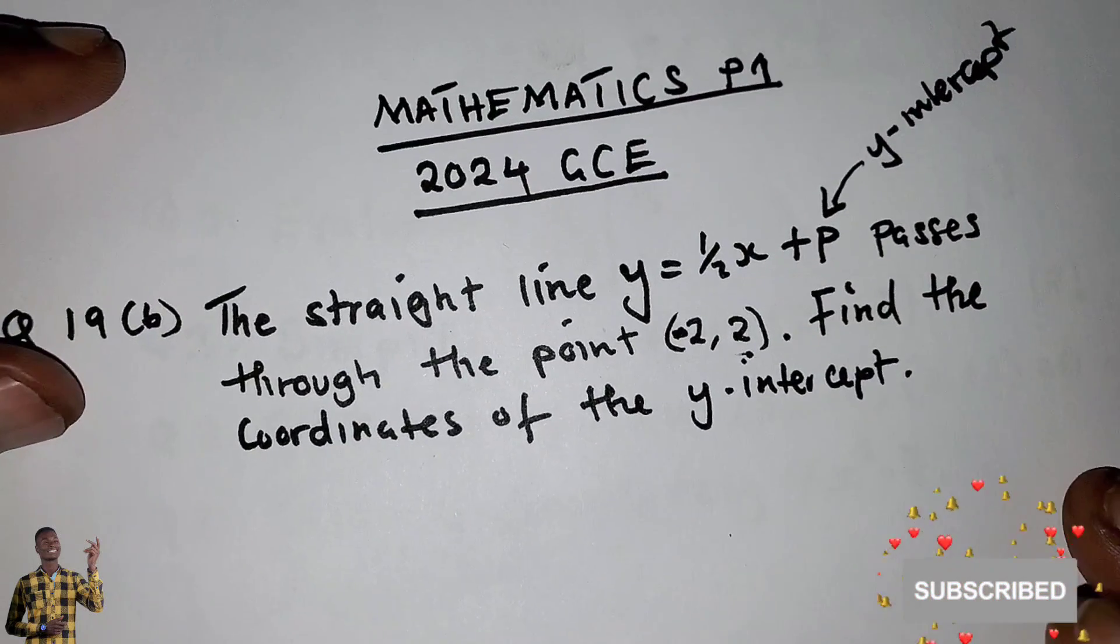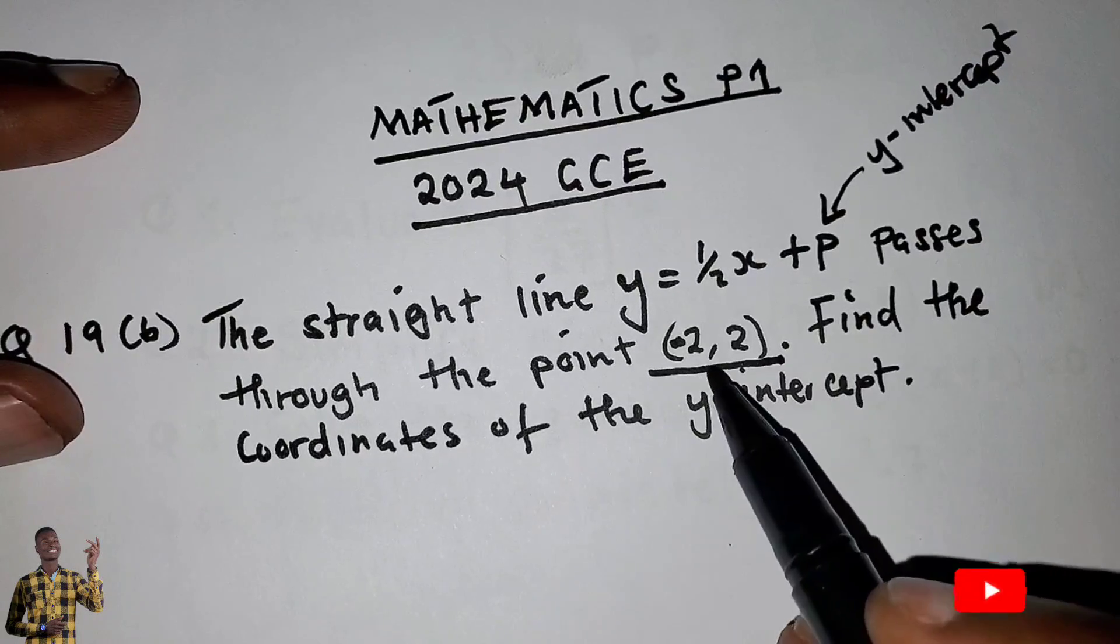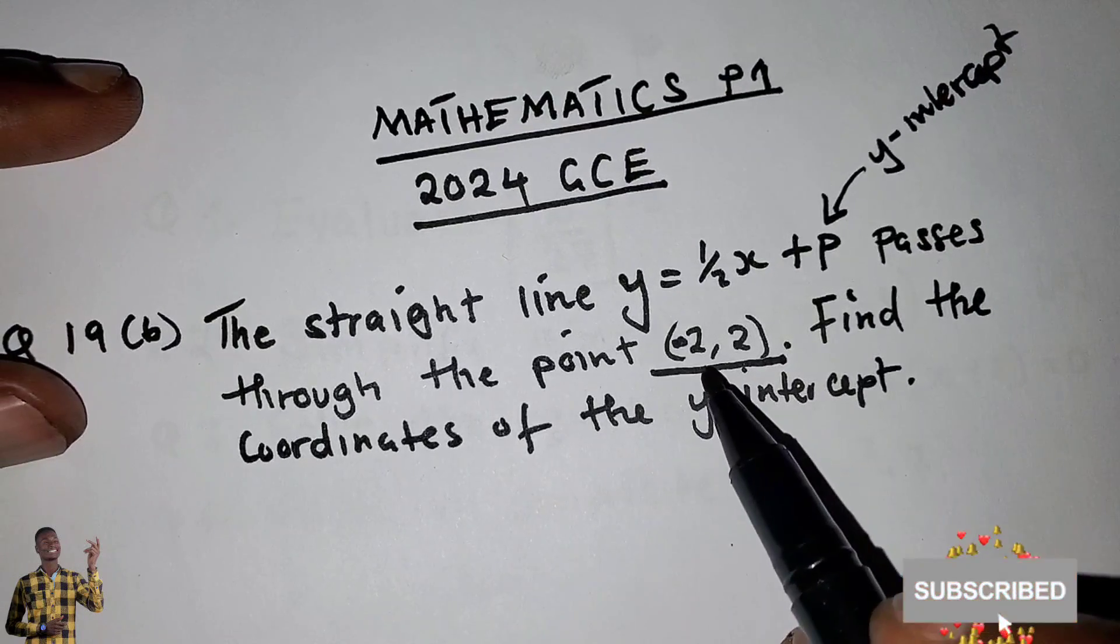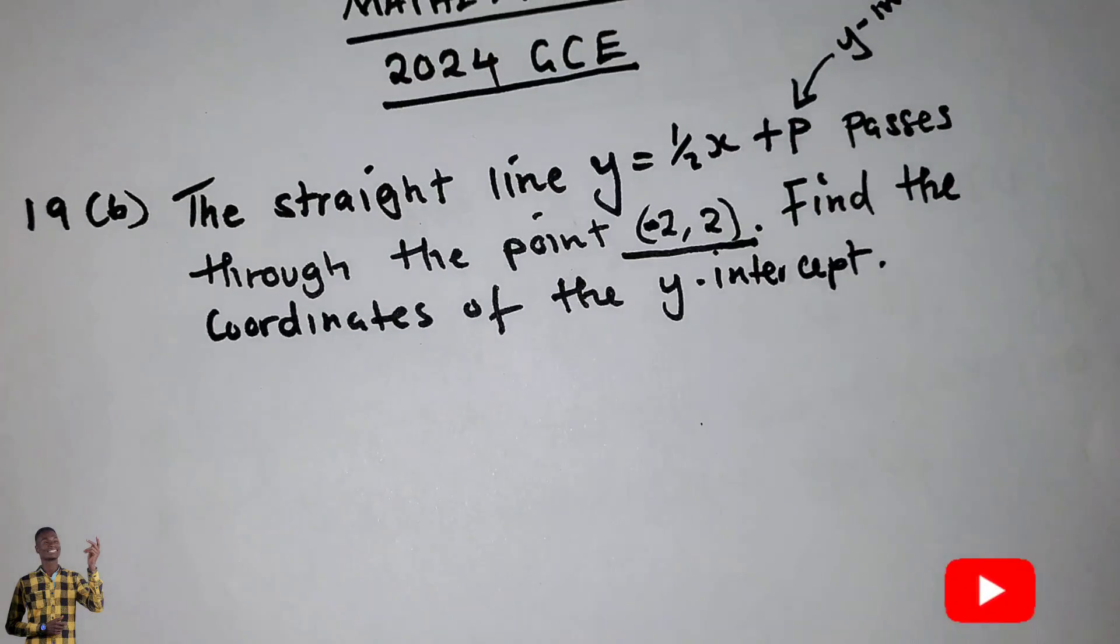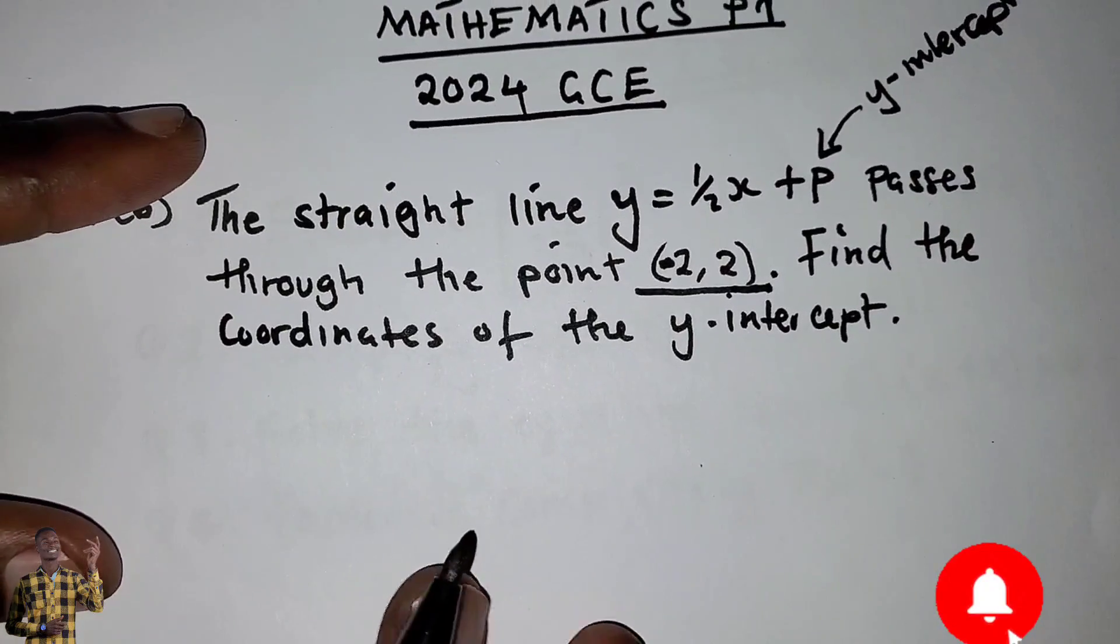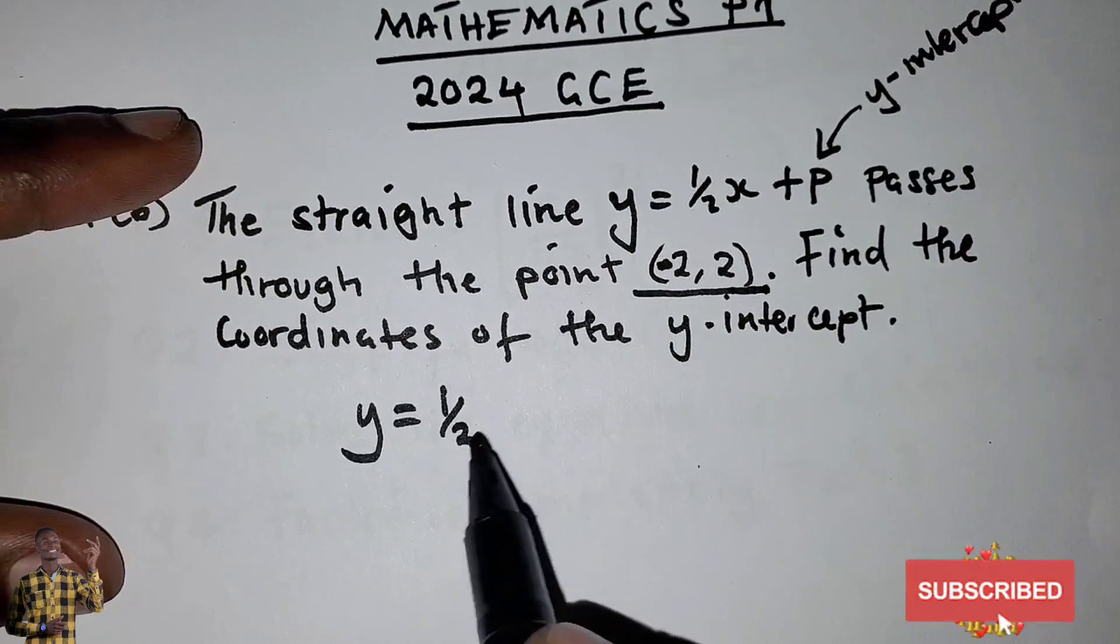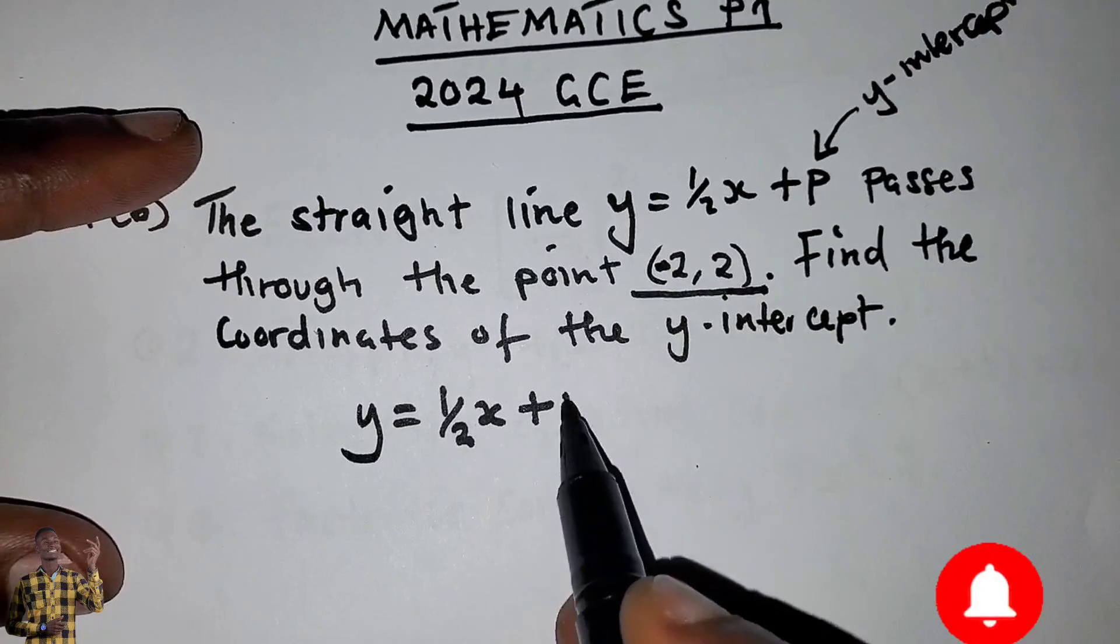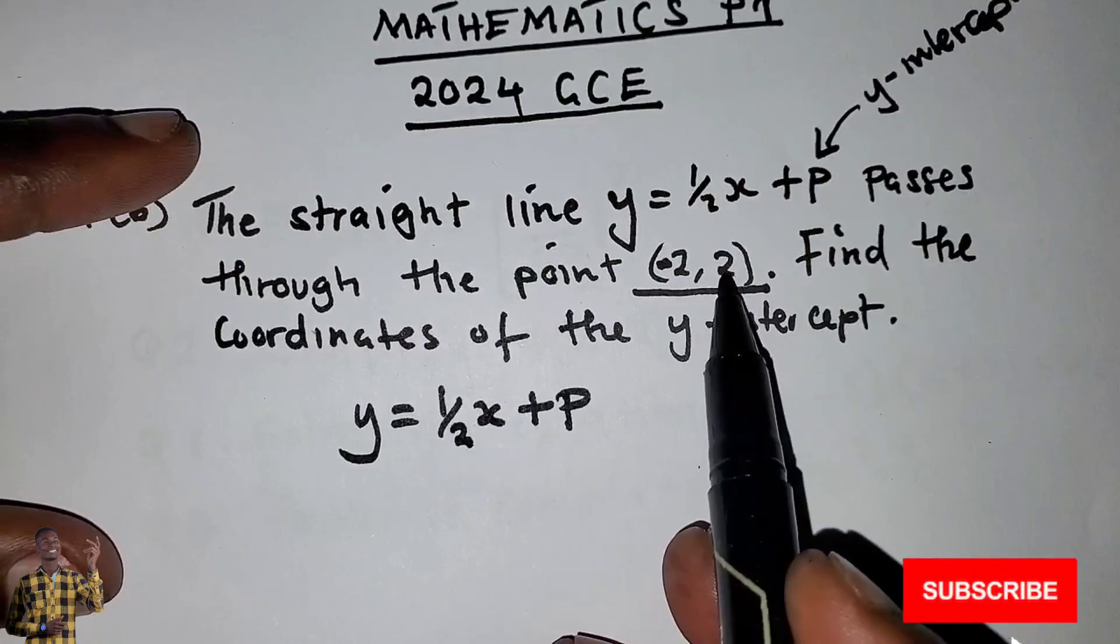Now finding that will be very easy since we've been given the point. We're going to say y equals 1/2 x plus P. Then we substitute the value of y, which is 2.